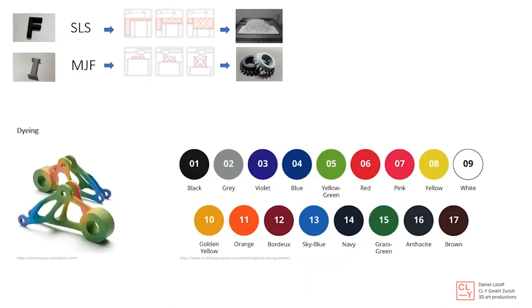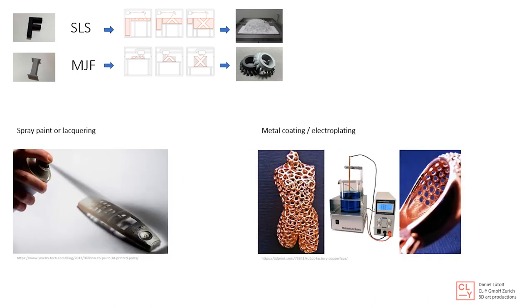Another way to treat your SLS or MJF models is by dyeing — you can mix colors and have a huge variety of colors for this process. The common way to treat your model is by spray painting or lacquering: first apply a prime coat, then treat it with all kinds of colors. A special way to treat your model is by metal coating or electroplating, which works for SLS and also for FDM and SLA prints. MJF is not the best for metal coating and electroplating.